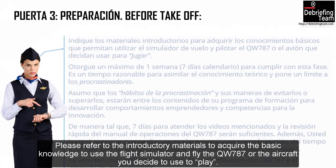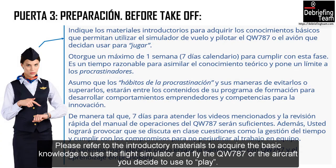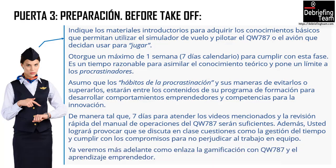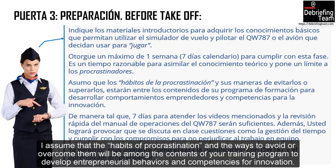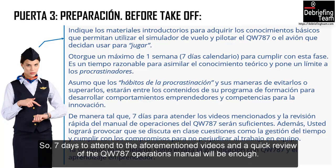Indique los materiales introductorios para adquirir los conocimientos básicos que permitan utilizar el simulador de vuelo y pilotar el Boeing 787, o el avión que decidan usar para «jugar». Otorgue un máximo de una semana — siete días calendario — para cumplir con esta fase. Es un tiempo razonable para asimilar el conocimiento teórico y pone un límite a los procrastinadores. Asumo que los «hábitos de la procrastinación» y sus maneras de evitarlos estarán entre los contenidos de su programa de formación. Siete días para atender los videos mencionados y la revisión rápida del manual de operaciones del Boeing 787 serán suficientes.